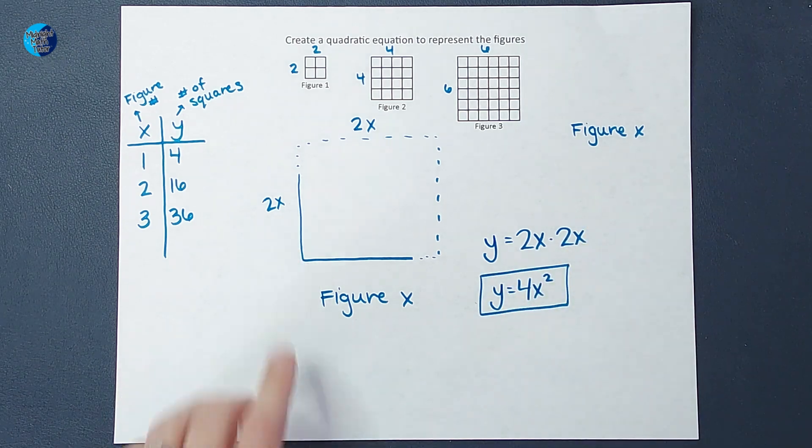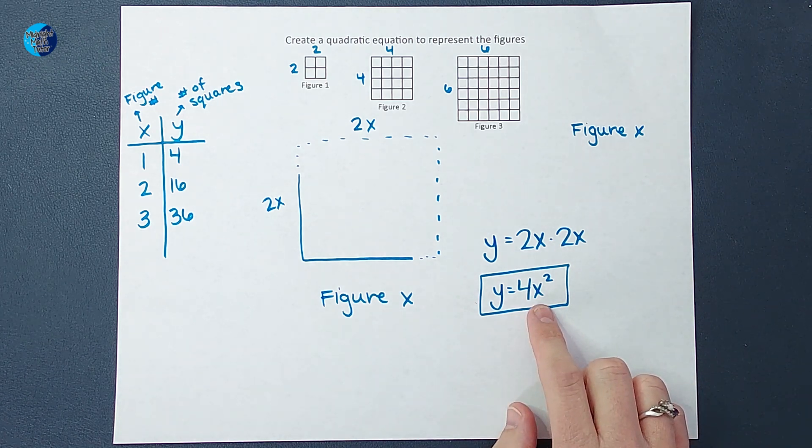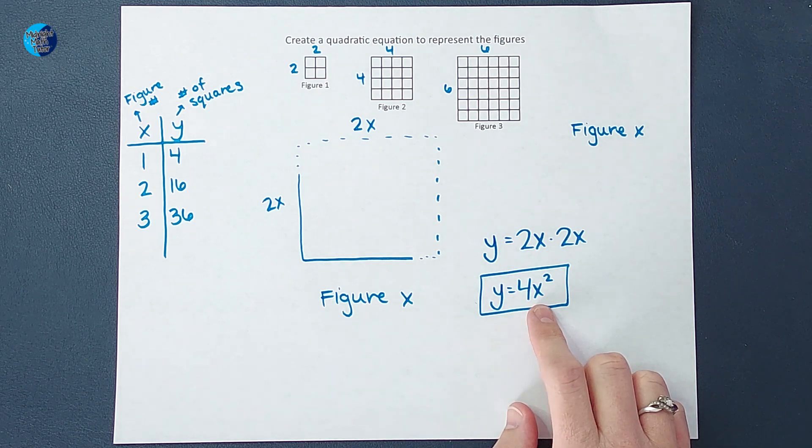And there is that quadratic equation. Now we could say what's the 500th figure, how many squares is it gonna have? We could plug that in and figure it out.